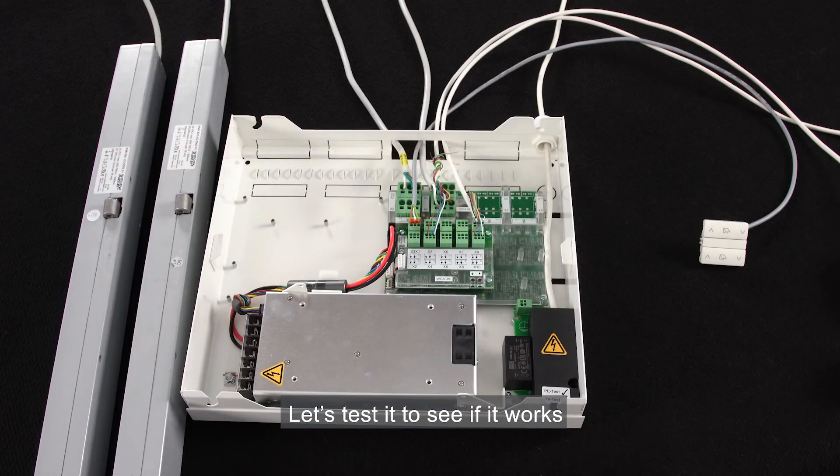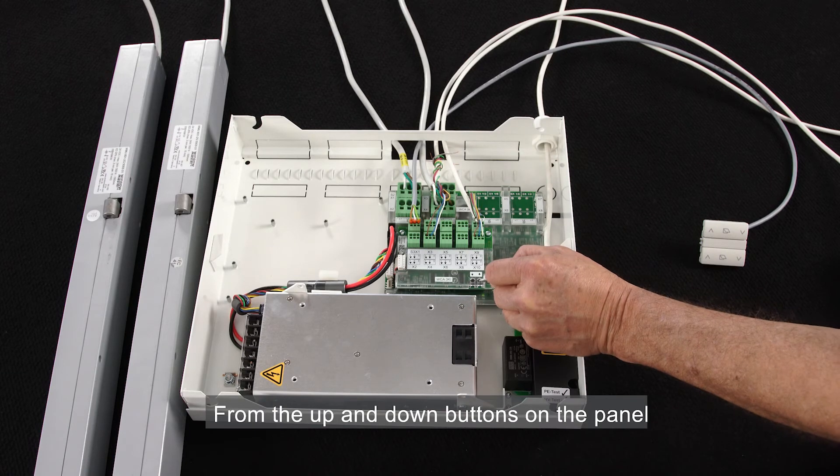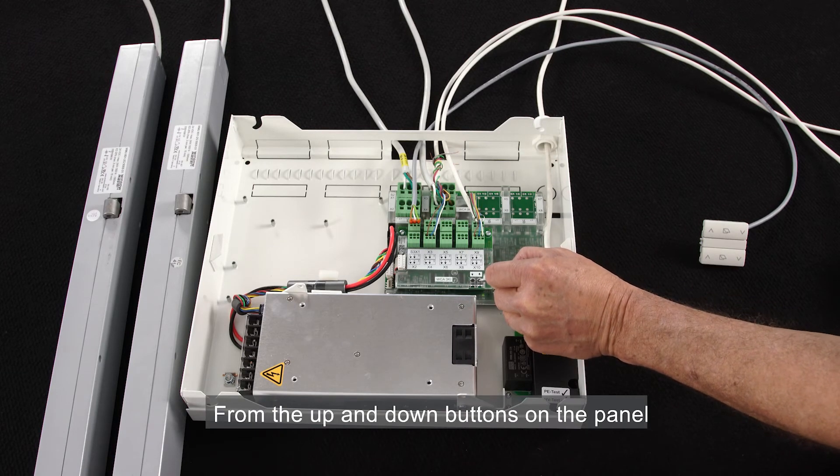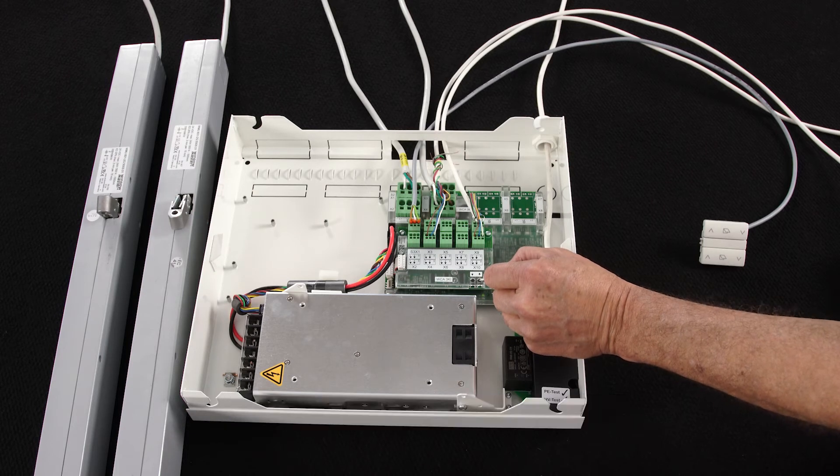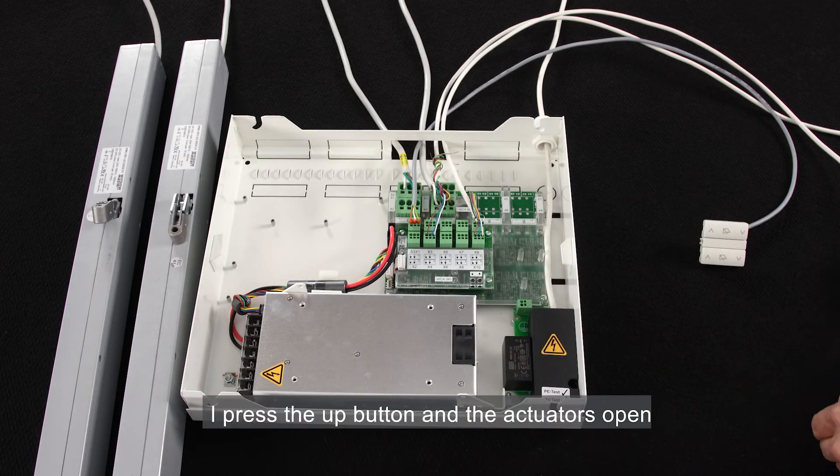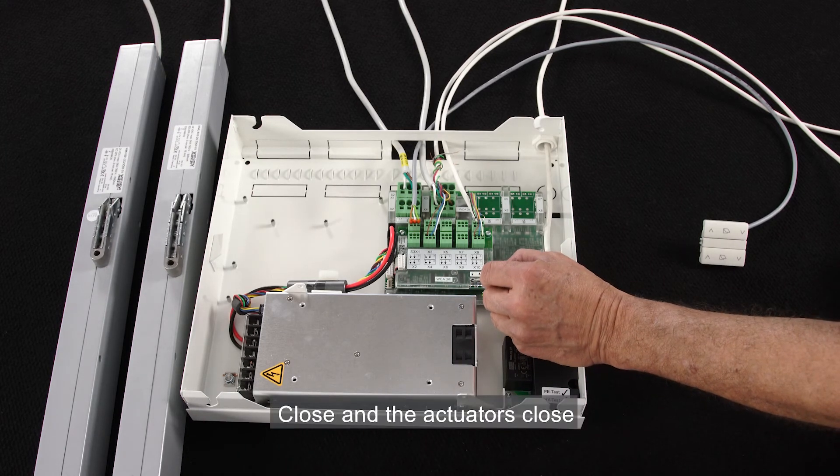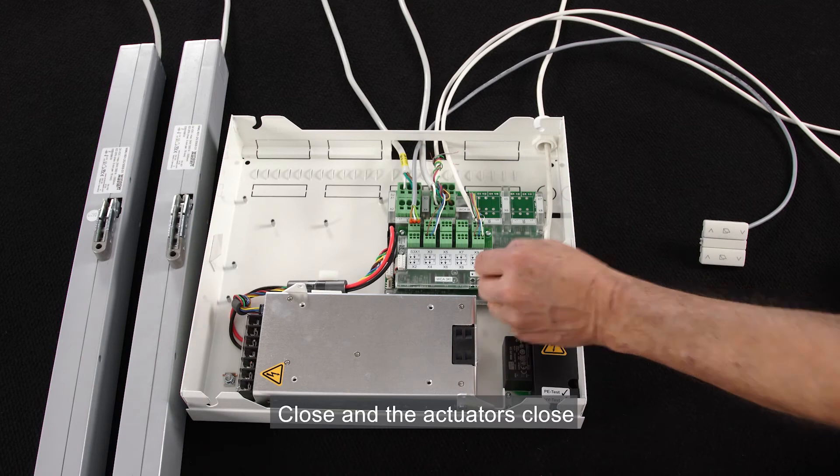Let's test it to see if it works. From the up and down buttons on the panel, we test that the motor lines are working. I press the up button and the actuators open. Close and the actuators close.